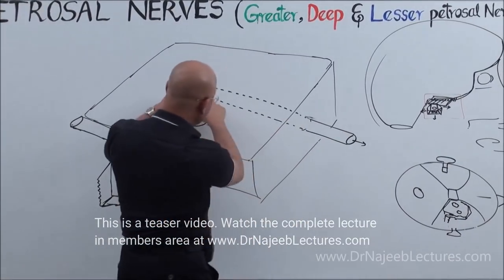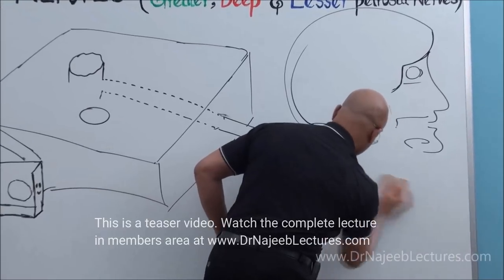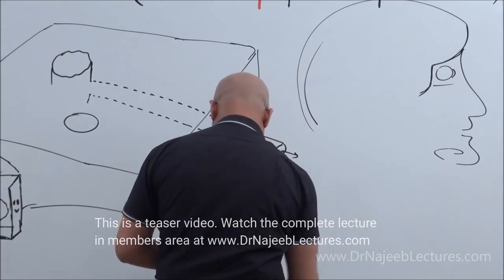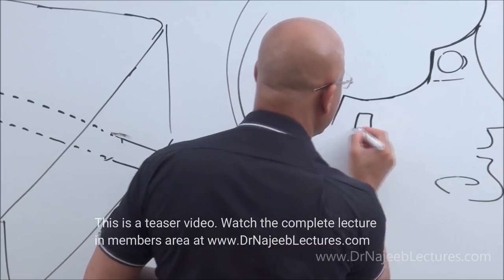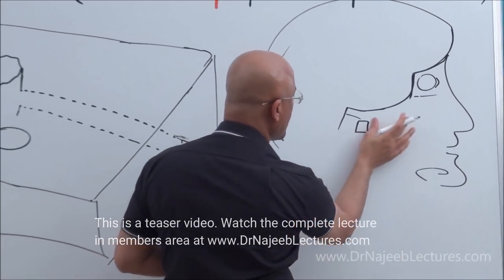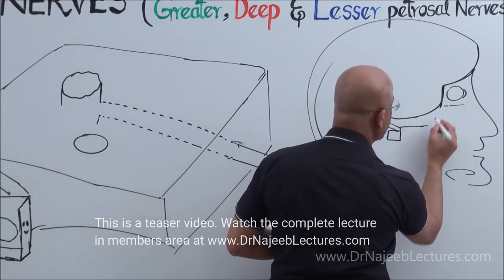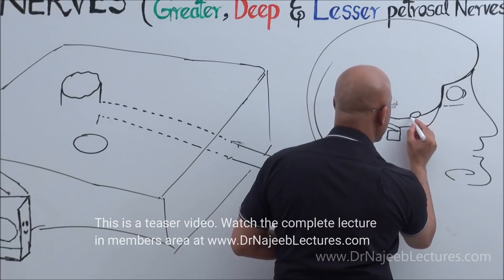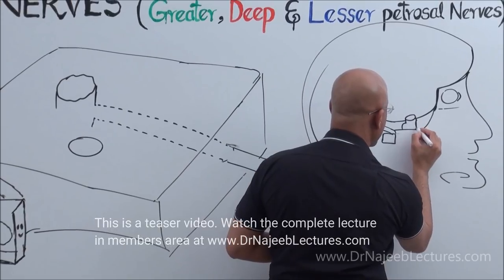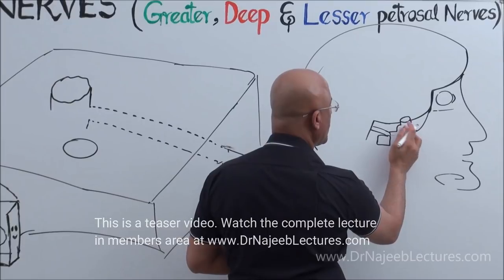Now let me show this pathway in this diagram — later I will put the nerves in. This is the middle cranial fossa; here was the ear. This was the internal acoustic meatus. This was the petrous part of temporal bone. Here I was showing foramen lacerum, and on the back of foramen lacerum is the opening of the carotid canal. The lower part of foramen lacerum is closed by cartilage.